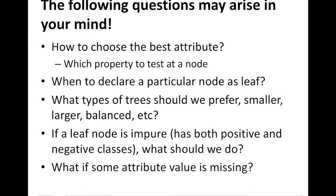We discussed one stopping criterion where we declared a node as a leaf node if it is pure — if all instances belong to either the positive class or the negative class. But what if it hasn't achieved purity and has both positive and negative classes? Should we keep splitting, or mark it as a leaf node? Also, what if some attribute value is missing — how can we still successfully employ this algorithm?